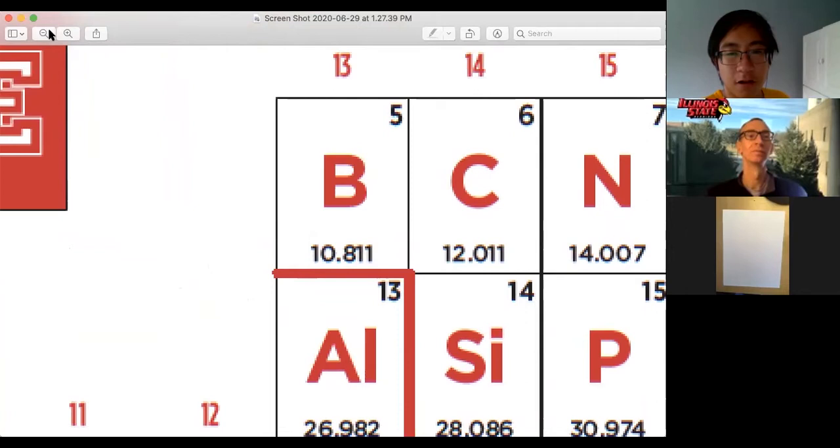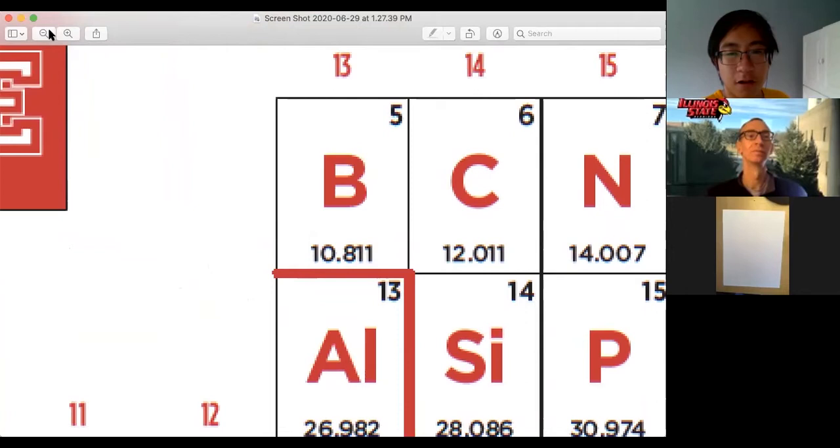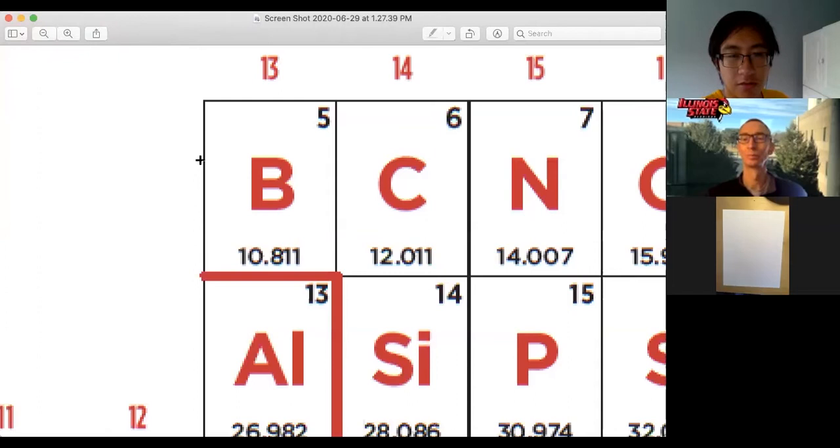Carbon has 12.011 grams per mole and so on and so forth. You can see all of these numbers for every single element on the periodic table. And so when we're taught a lot about how to use these numbers, how to use them for stoichiometry, what they mean, and how they're important for calculations.